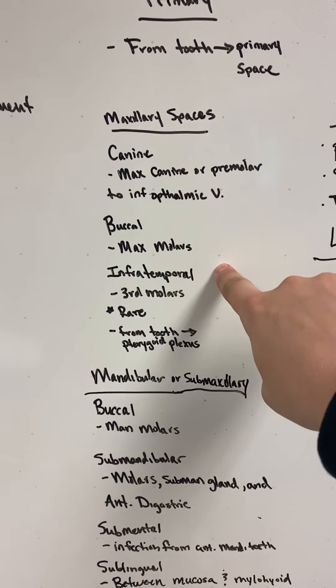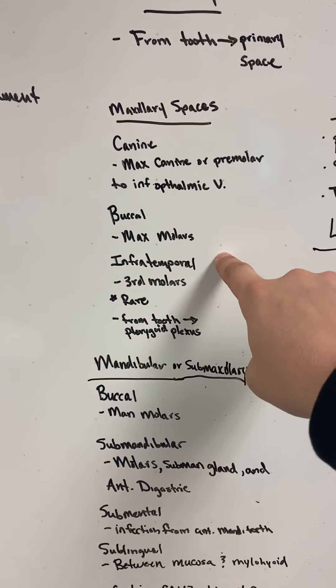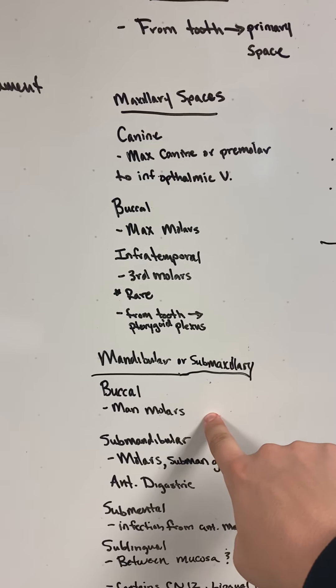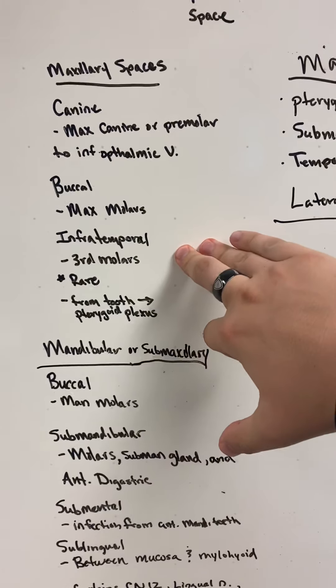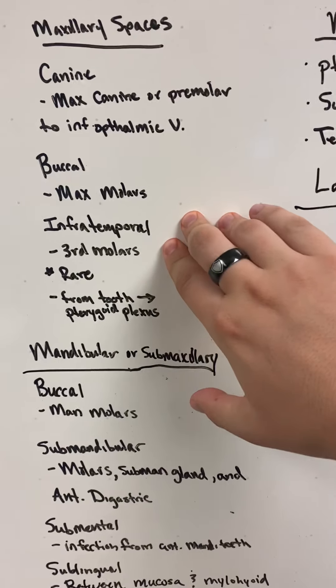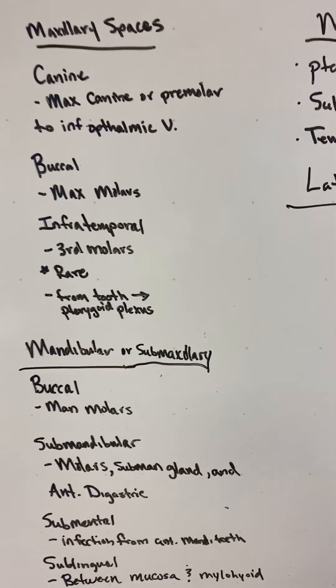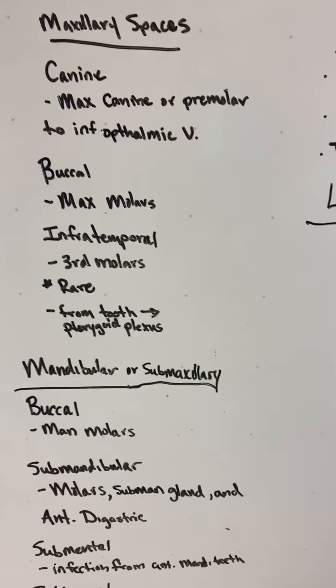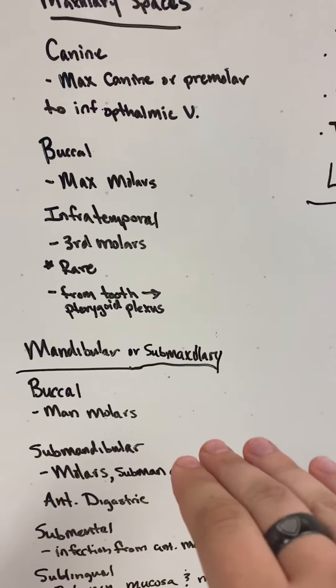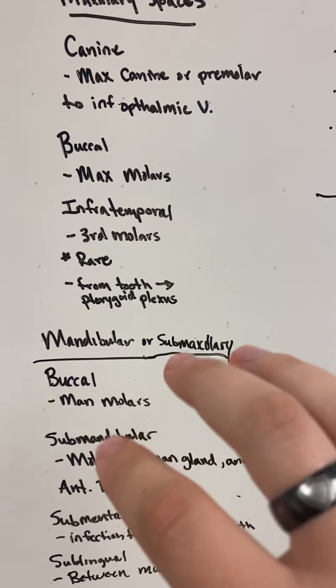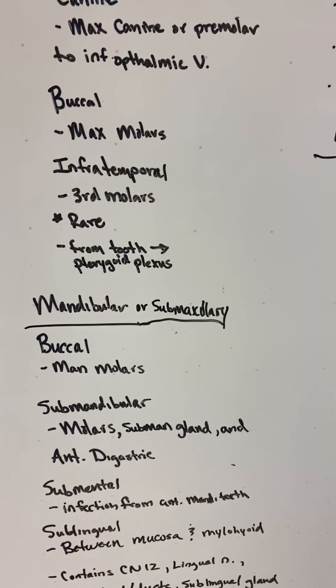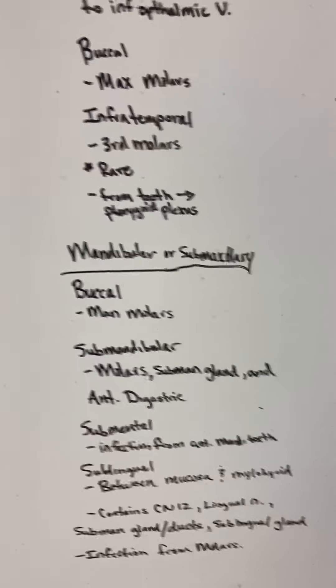The buccal would be the maxillary molars, and buccal is also a mandibular space as well. We have the infratemporal, this one's very rare, has third molars, and this is from the tooth to the pterygoid plexus. That obviously can get bad because the pterygoid plexus connects to the cavernous sinus. So that'd be an unfortunate way to die.